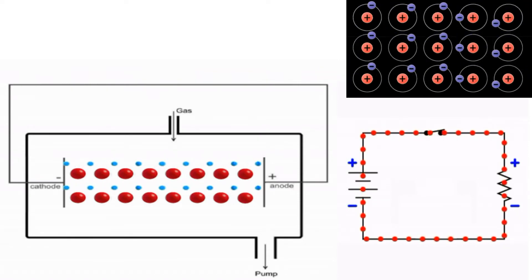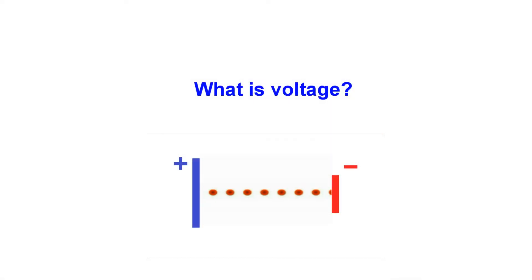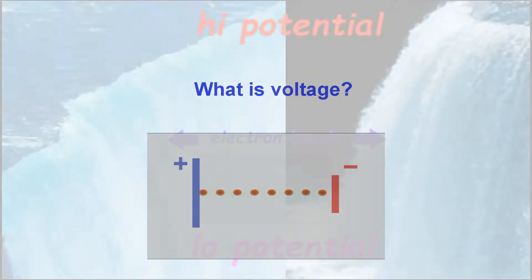What induces this flow is said to be a difference in potential known as voltage, widely simulated as water running down a hill.